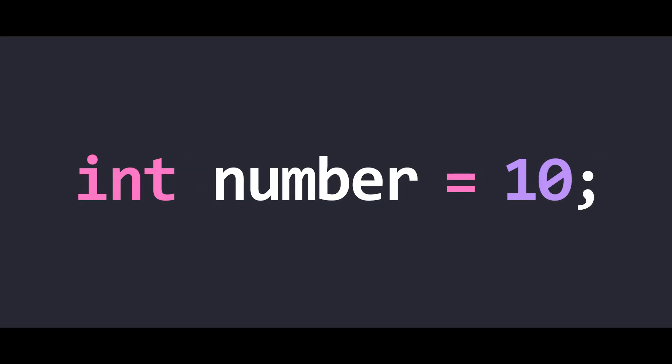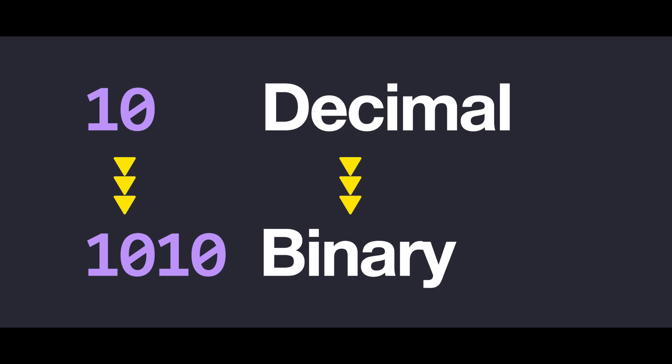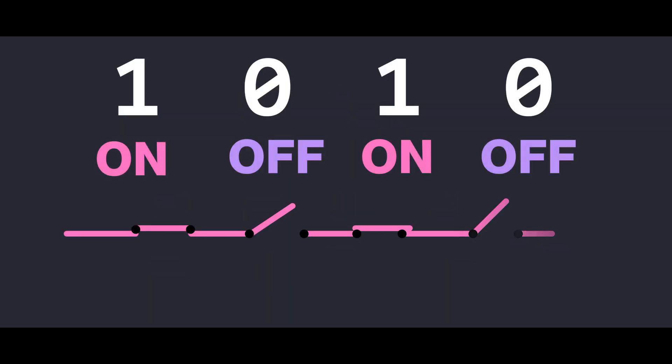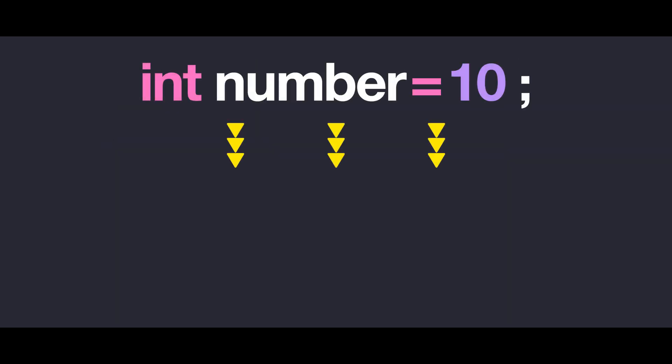In our case, the simplest code is assigning the integer 10 to a variable called 'number'. The problem is that the number 10 is in decimal form and must be represented in binary. In other words, our computer can only see the number 10 as a series of on/off switches.